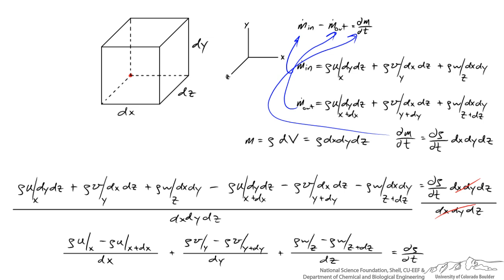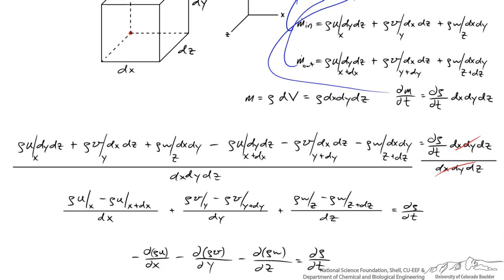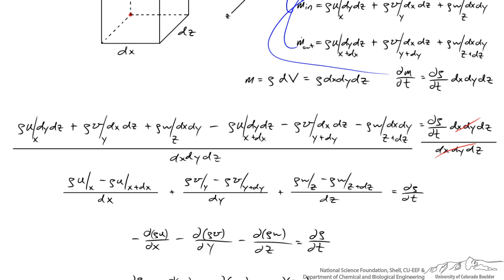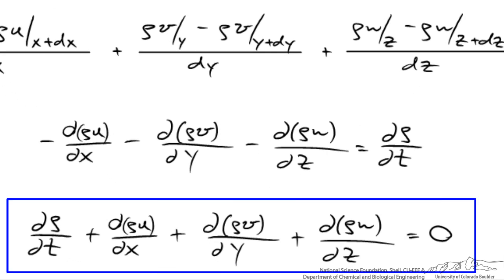And finally since we're dealing with differential lengths and the limit of dx dy and dz approaching zero, I come up with the three partial derivatives on the left. And if I simplify these, or I move them over, I get the continuity equation in its traditional form.